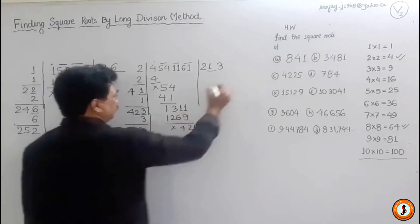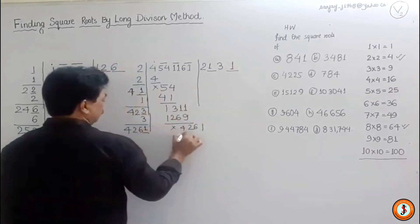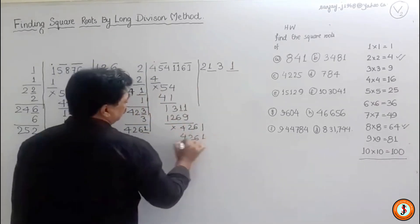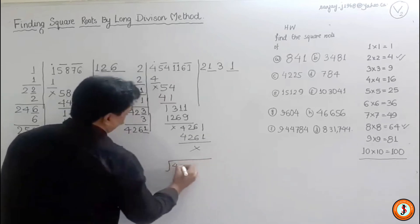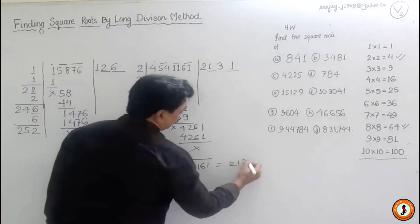Now it comes four, two, six, one. And we are fast doing it now. So obviously the square root of 4541161, like a phone number, 2131.